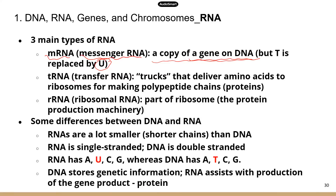tRNA, also known as transfer RNA, is basically like a pickup truck — it grabs onto amino acids and delivers them to ribosomes to make an amino acid chain. Ribosomal RNA (rRNA) is part of the ribosome. Ribosomes make proteins, and part of the ribosome is ribosomal RNA.